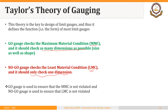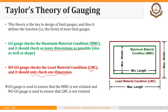For a hole or any other internal feature, the MMC is the lower limit and LMC is the upper limit. For an external feature like the diameter of a shaft, the LMC is the lower limit and MMC is the upper limit. If you are not clear on this, I would recommend you watch my lecture on material conditions.